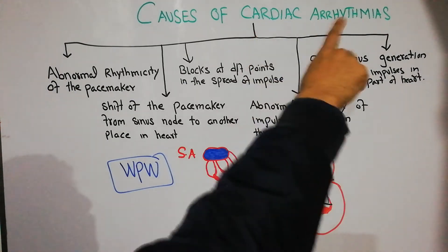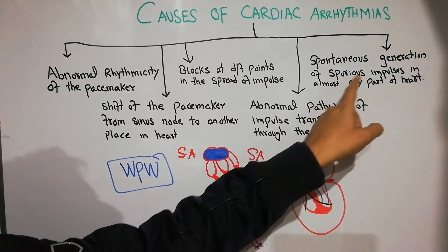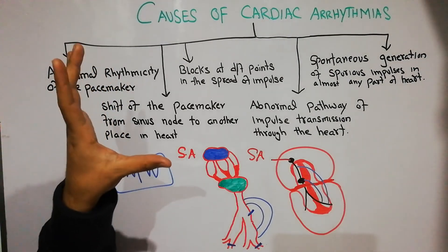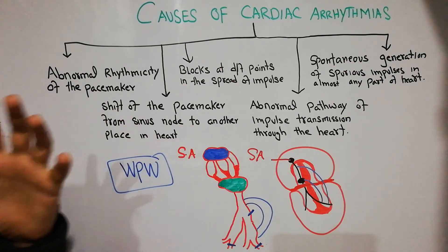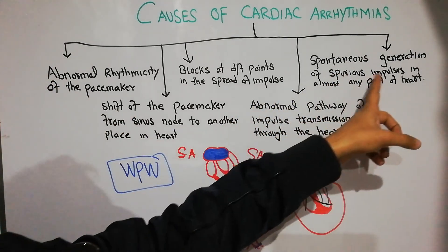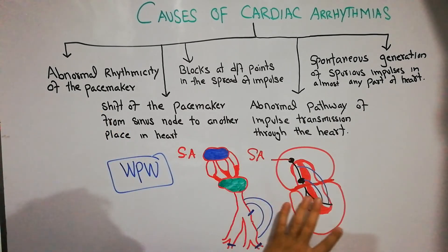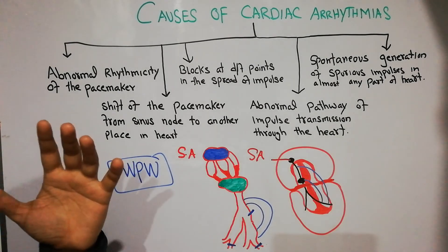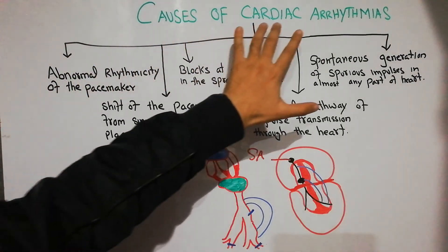The fifth and final cause is the spontaneous generation of spurious impulses in almost any part of the heart. These impulses look like normal impulses but are not — they are fake or abnormal impulses. They can be generated anywhere in the heart due to ischemia, infarction, infection, trauma, or other reasons.